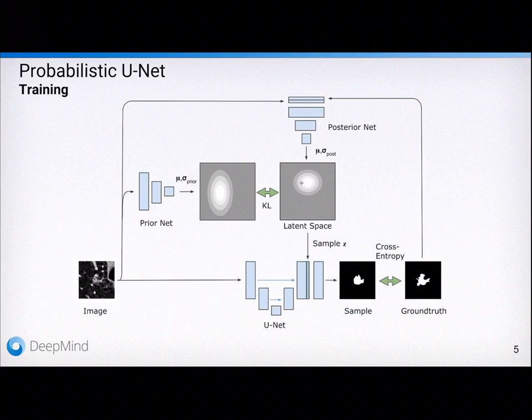The net is trained via variational inference, which during training requires an additional network, the so-called posterior net. The posterior net is conditioned on both the image and the segmentation and learns to embed segmentation variants in the latent space using a cross-entropy loss. On top of that, a KL divergence, colloquially put, pulls the prior and the posterior net together.